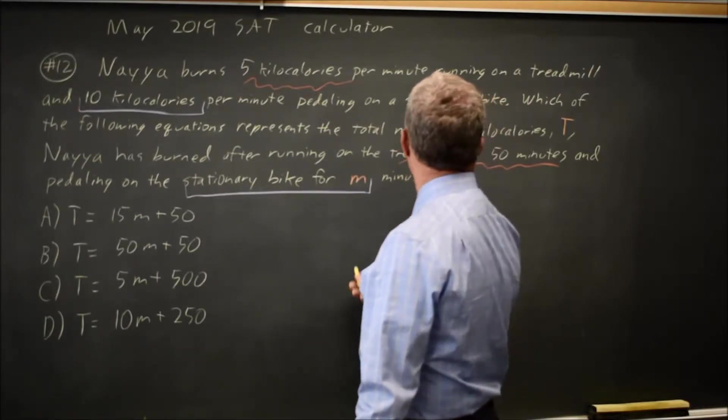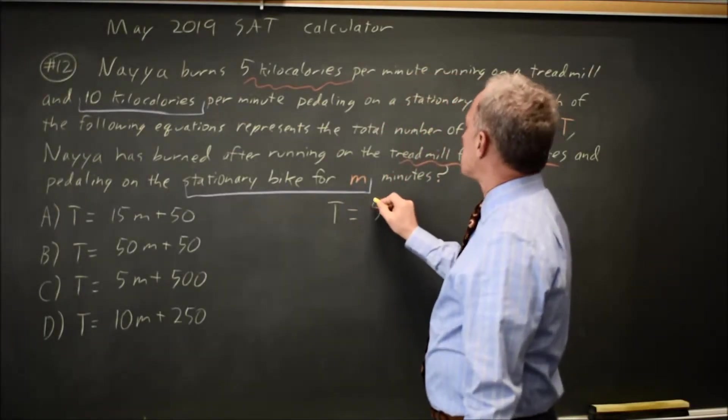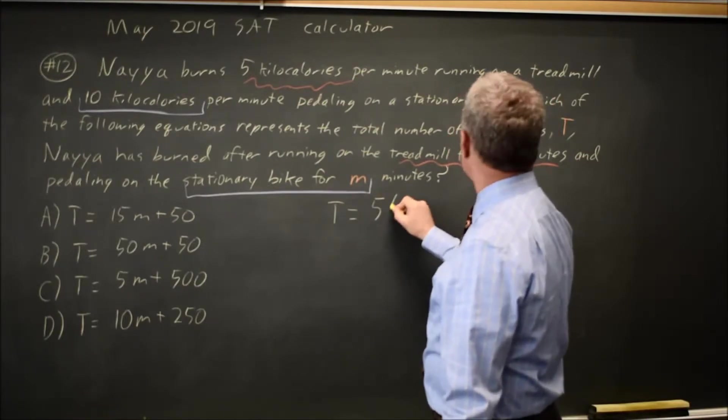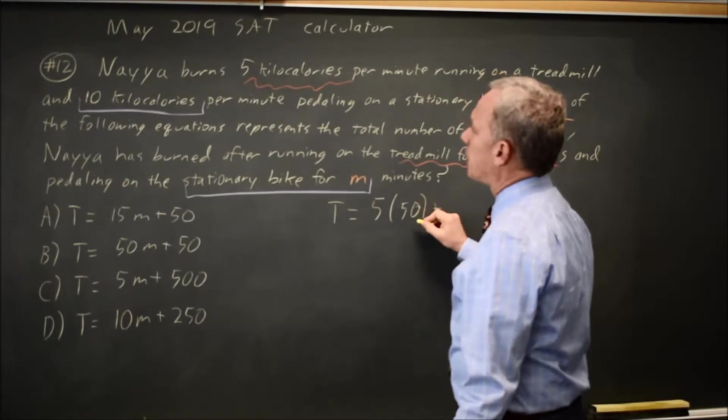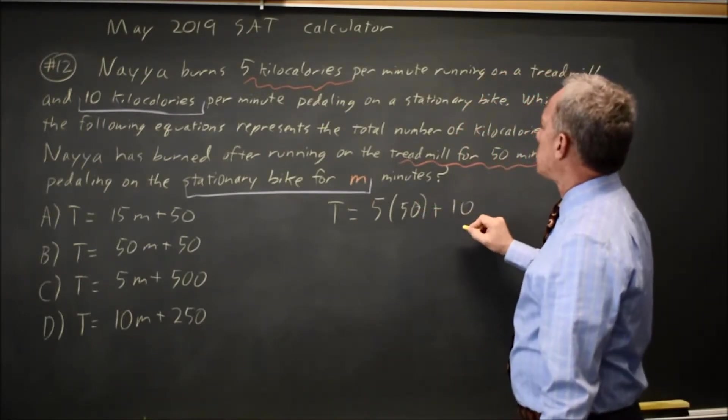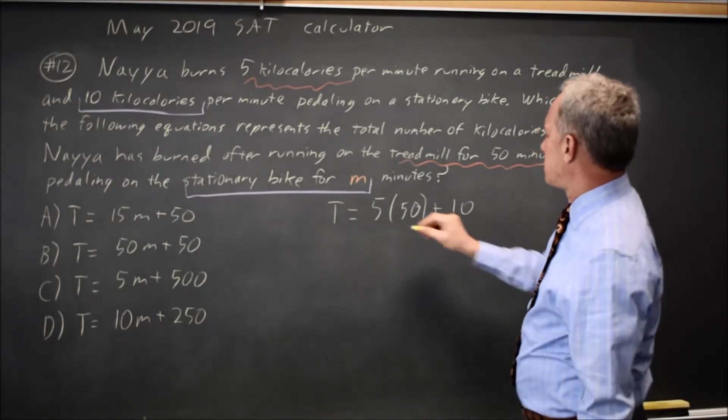Total calories burned T is the calories per minute on the treadmill times the number of minutes on the treadmill, plus calories per minute on the stationary bike times the number of minutes on the stationary bike.